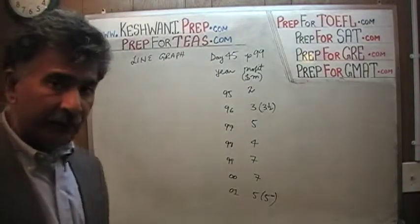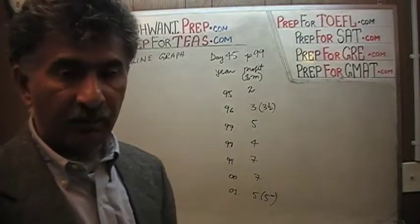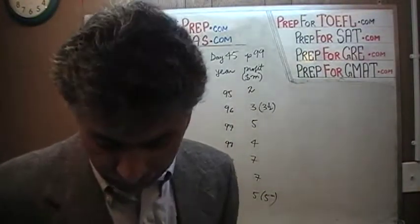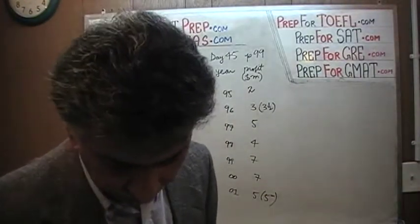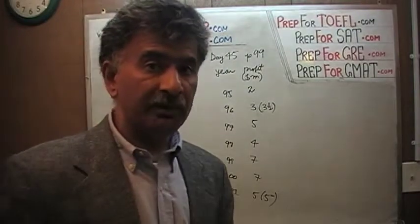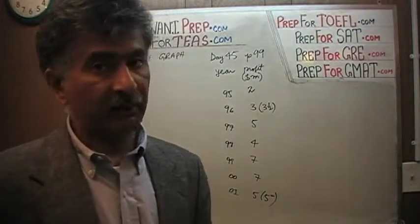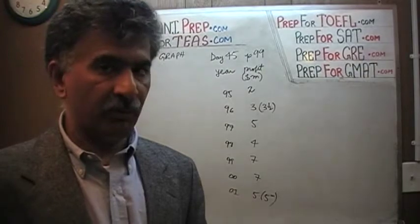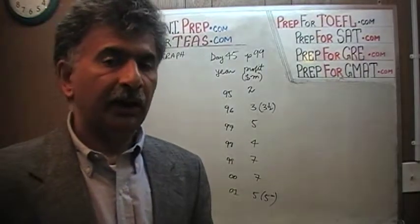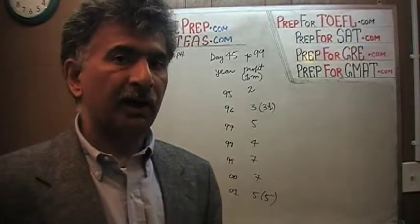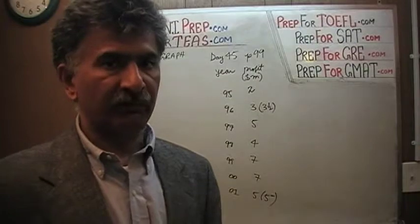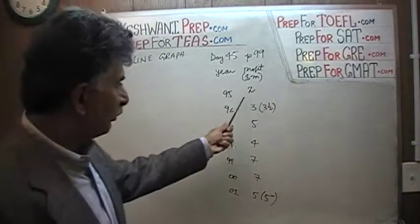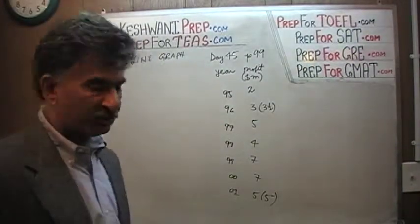A line graph starts out like any other graphical presentation with the raw data. Now the difference here is that in the book we already have been given a line graph. Pretend that graph does not exist. What I want you to do is look at the graph and extract the raw data from it and then draw the graph yourself.